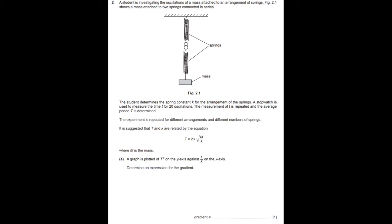Welcome to the Physics Tips for Cambridge Students YouTube channel. Today we are going to look at the June 2019 paper 5-2. This is by popular demand. I'm going to explain the second question because there are some problems with how to find or calculate the errors and determine the error bars.